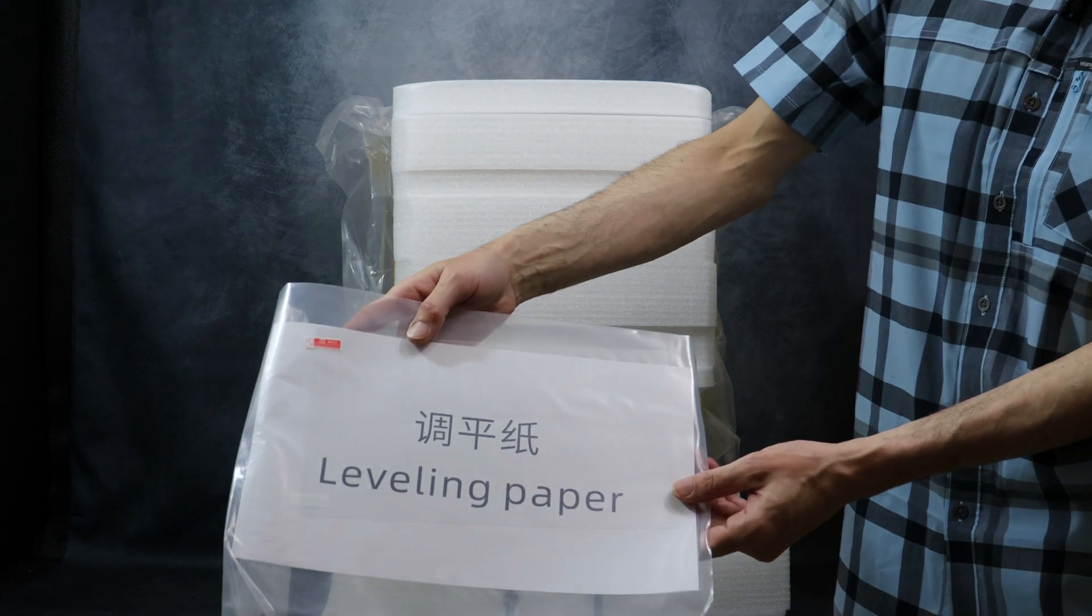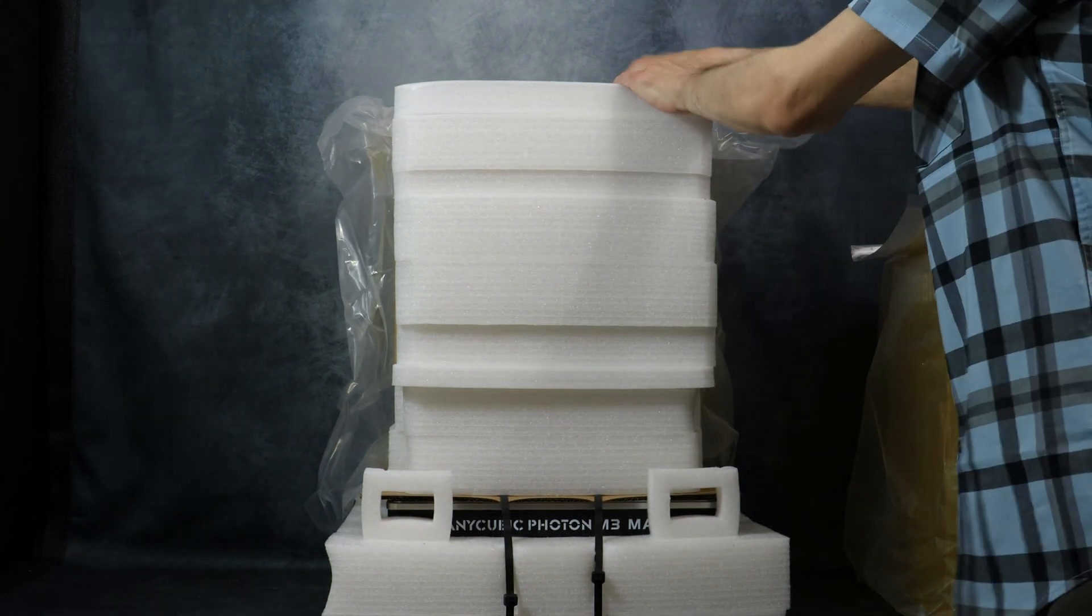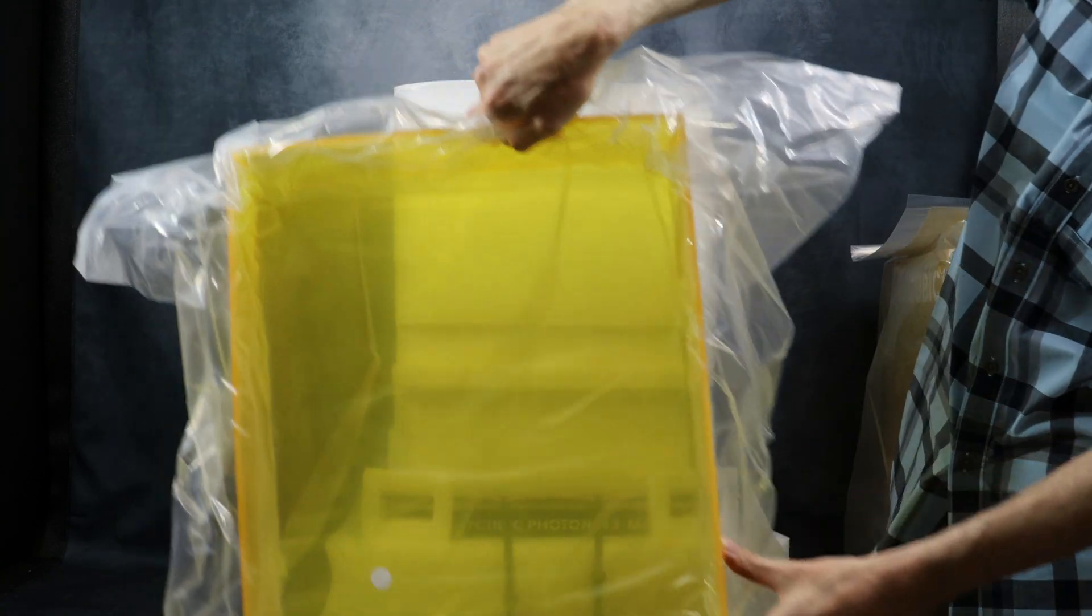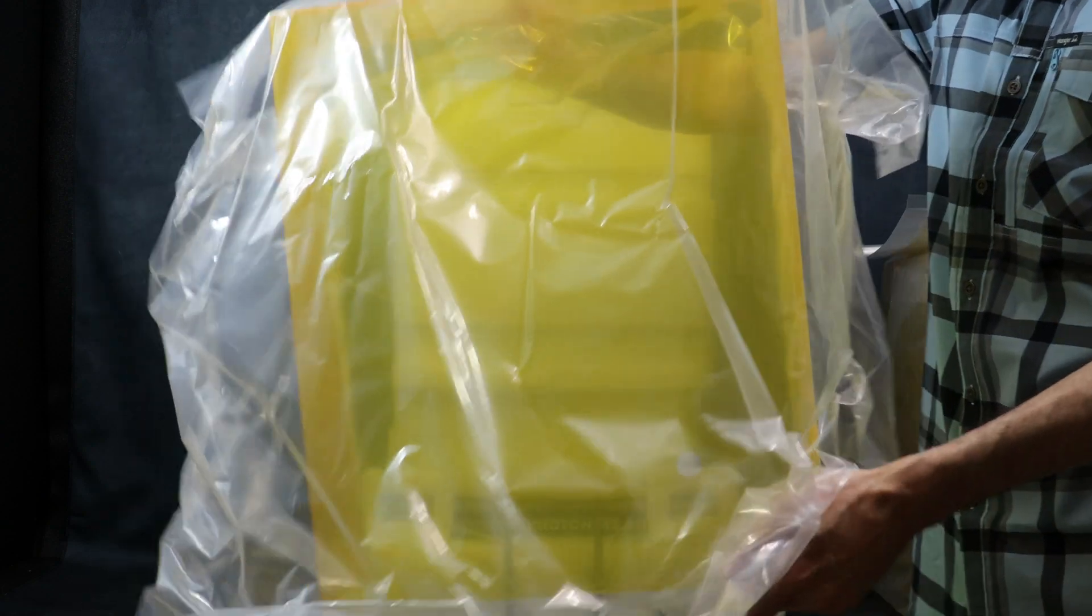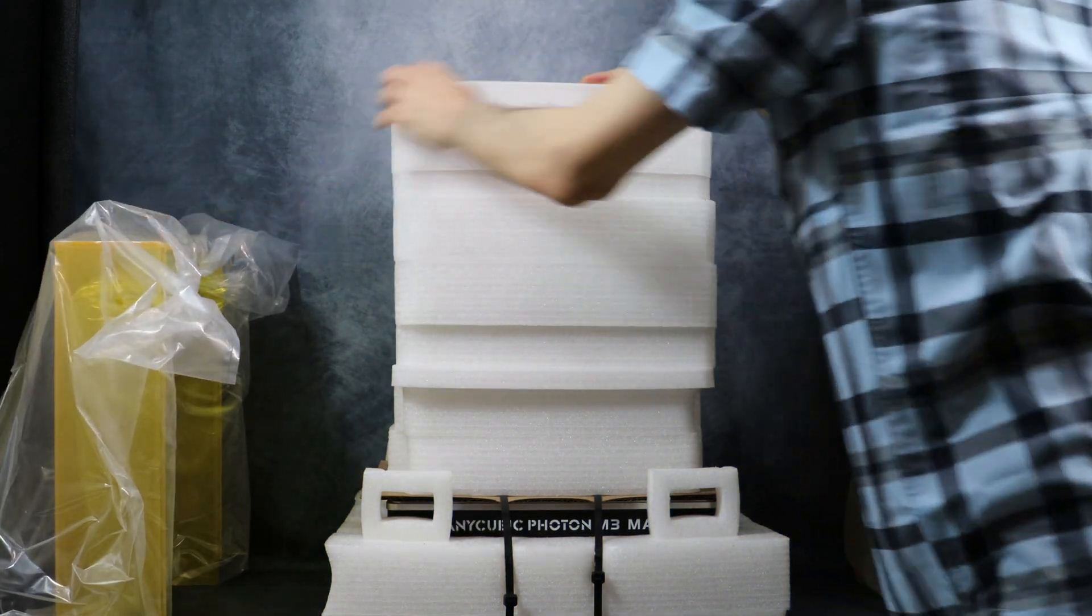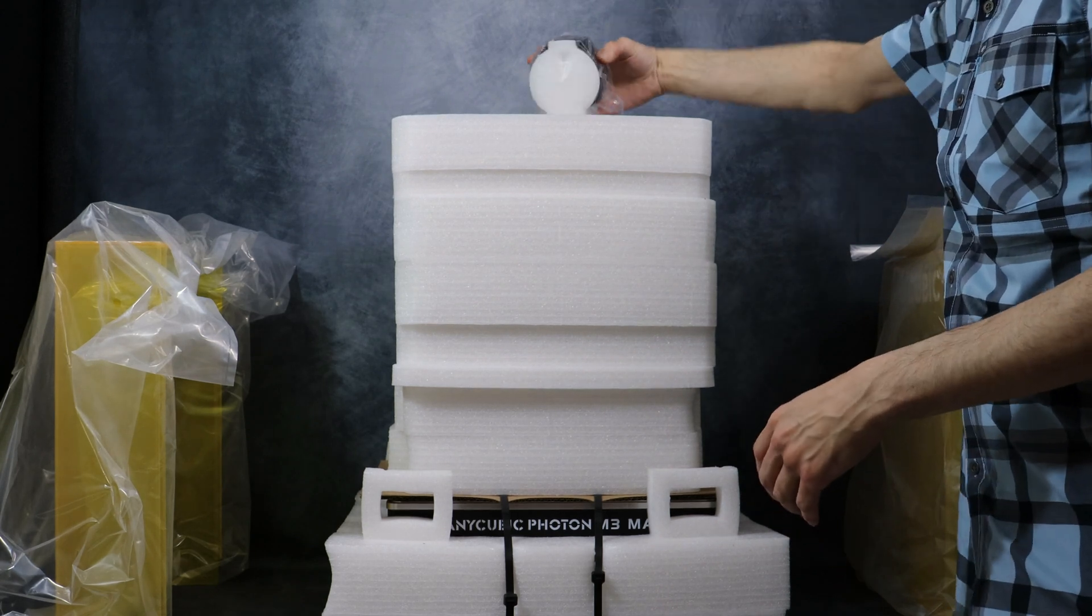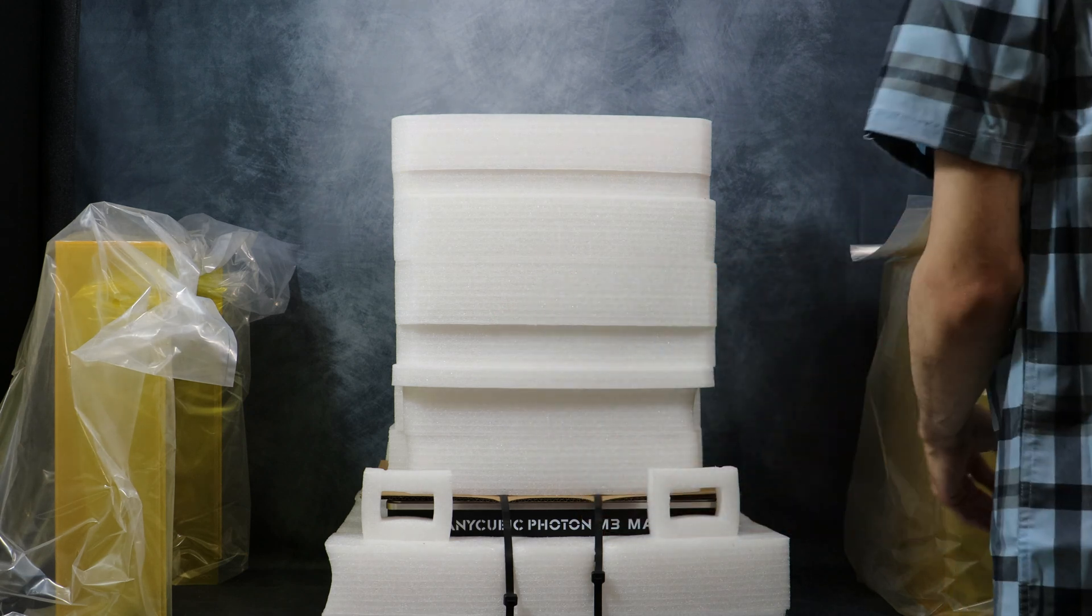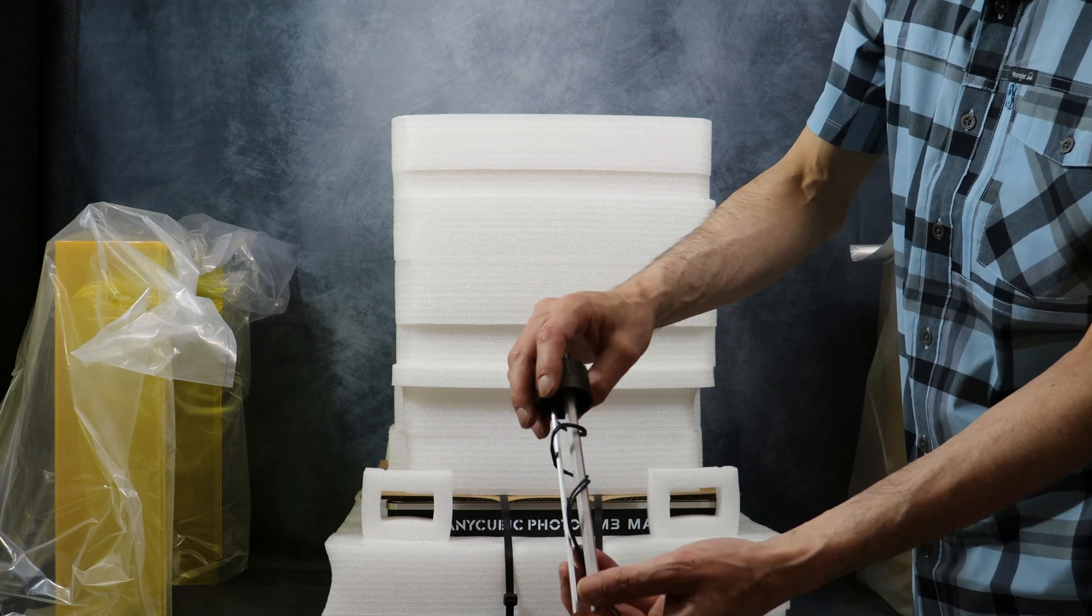Here we have the leveling paper and an extra screen protector. Next we have the back panel of the printer. You're going to secure this once we get everything removed from the printer. Here we have the bottle holder for the automatic refill that you attach to the back of the printer. Next we have the lid that goes on the 1kg Anycubic bottle for the auto refill.